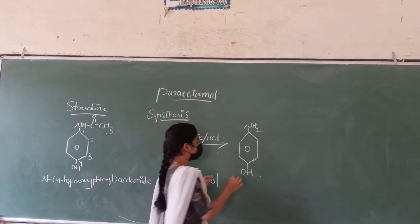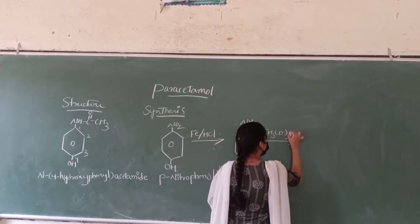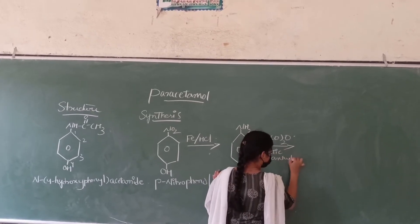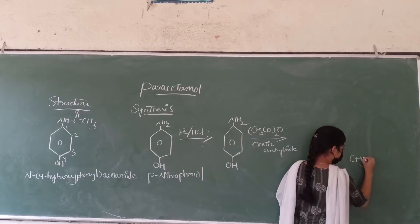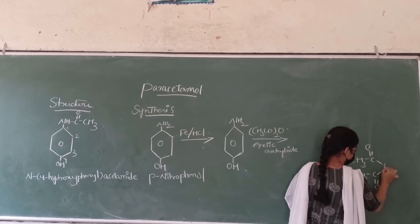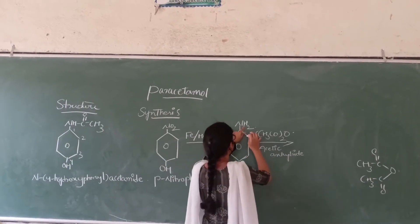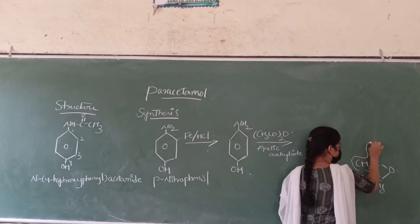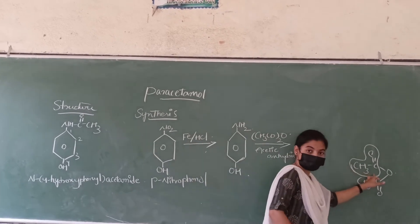Now this para-aminophenol is treated with acetic anhydride, that is CH3CO-O-COCH3. The structure of acetic anhydride will be like this: CH3C=O linked to O linked to CH3C=O. What happens is removal of hydrogen takes place and addition of the CH3CO group will take place. So the hydrogen is removed and the acetyl group is added, giving the final product paracetamol.